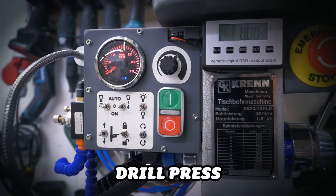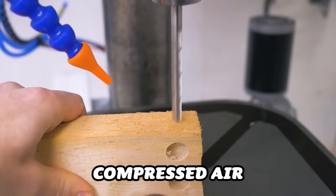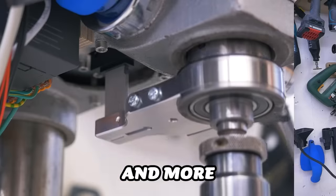I'm gonna show you nine drill press upgrades you may haven't seen before, like a magnetic vise, automatic compressed air, a motorized table with automatic clamping and more.